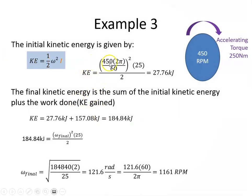The kinetic energy is calculated with 450 RPM. I have to convert that to omega: 450 divided by 60 gives revolutions per second, multiplied by 2π brings it to radians per second. That squared, times I of 25, times one half gives the shaft an initial kinetic energy of 27.76 kJ.